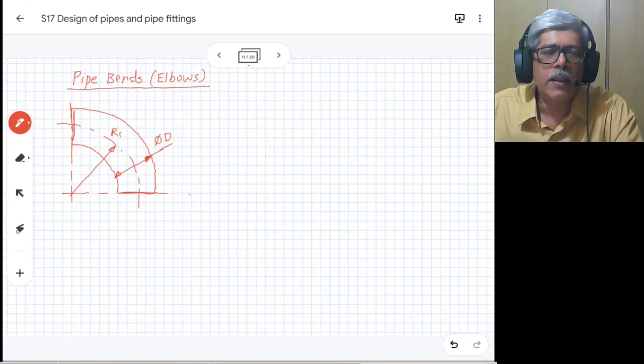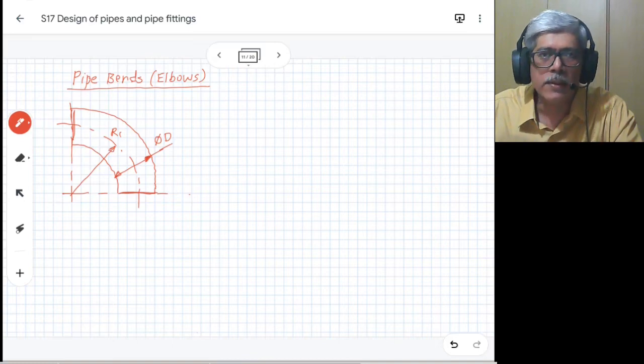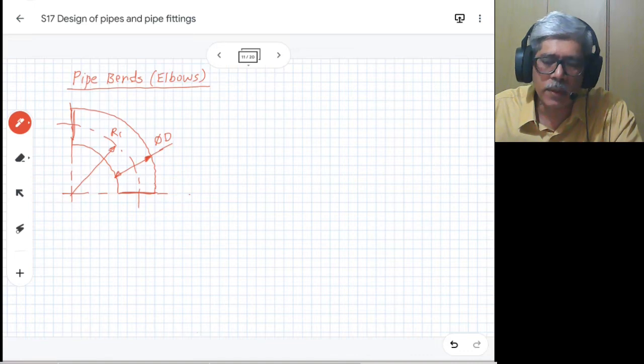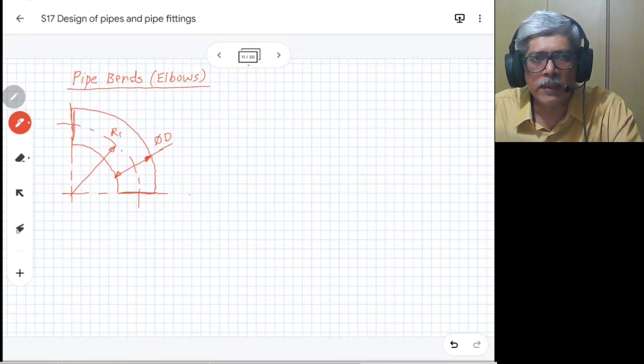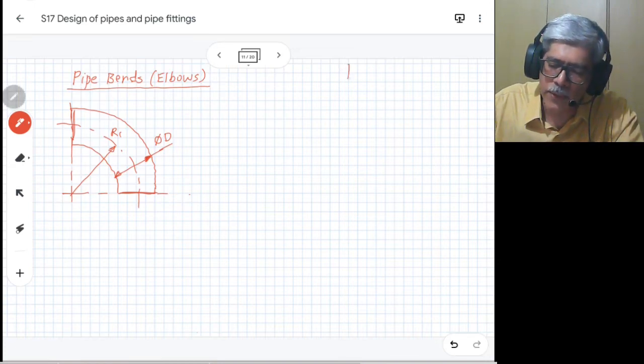Let's understand the thickness calculation for pipe bends. This is applicable to pipe bends which are formed - the pipe bends which have a clean bend radius. For them, this particular method can be used. There are other types of pipe bends which are known as miter pipes or miter bends.